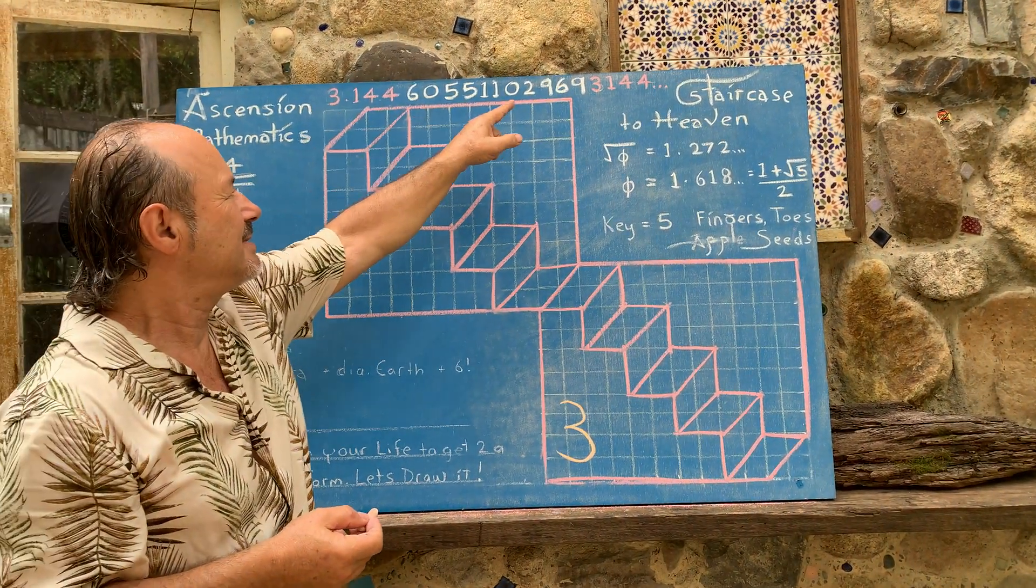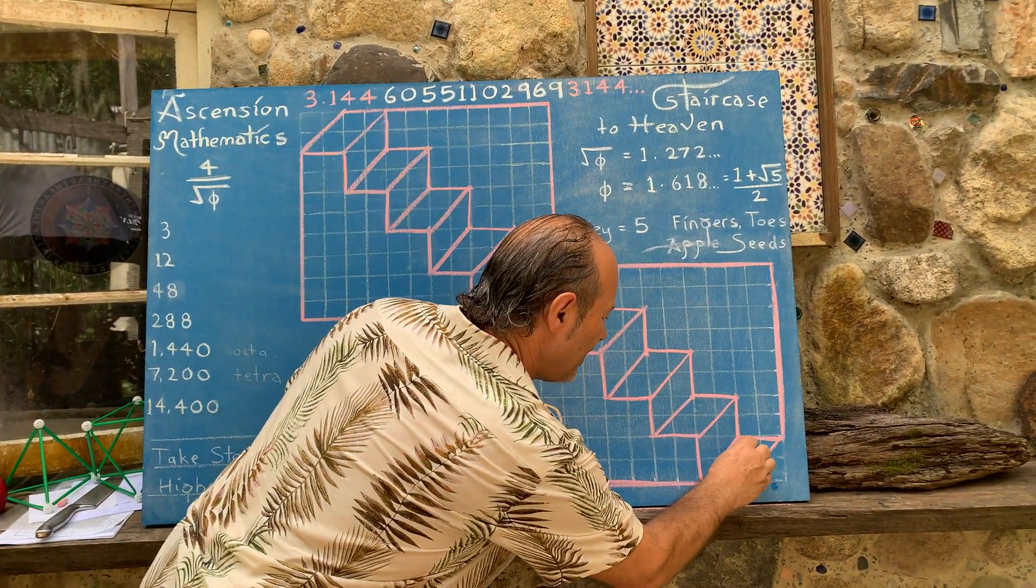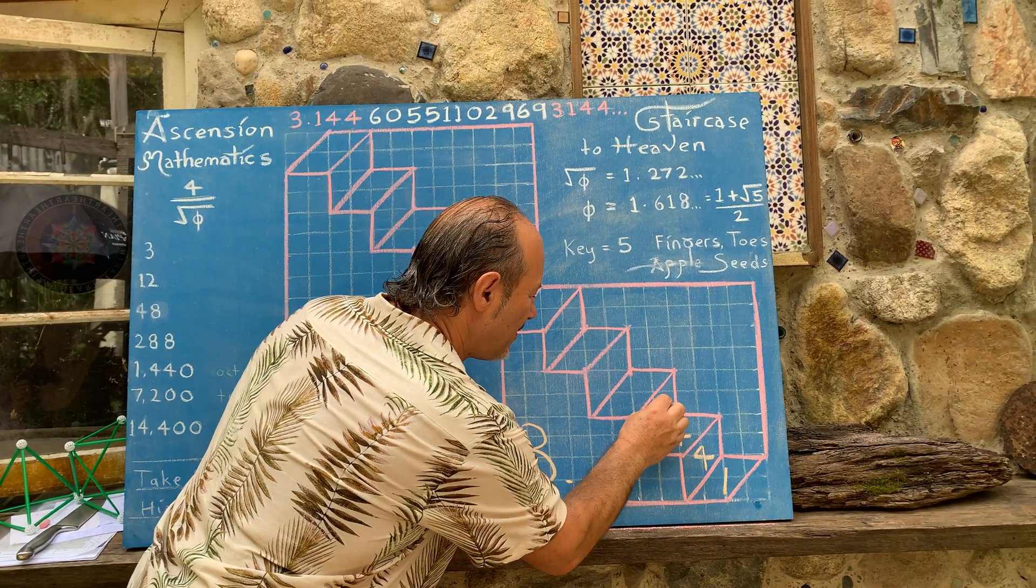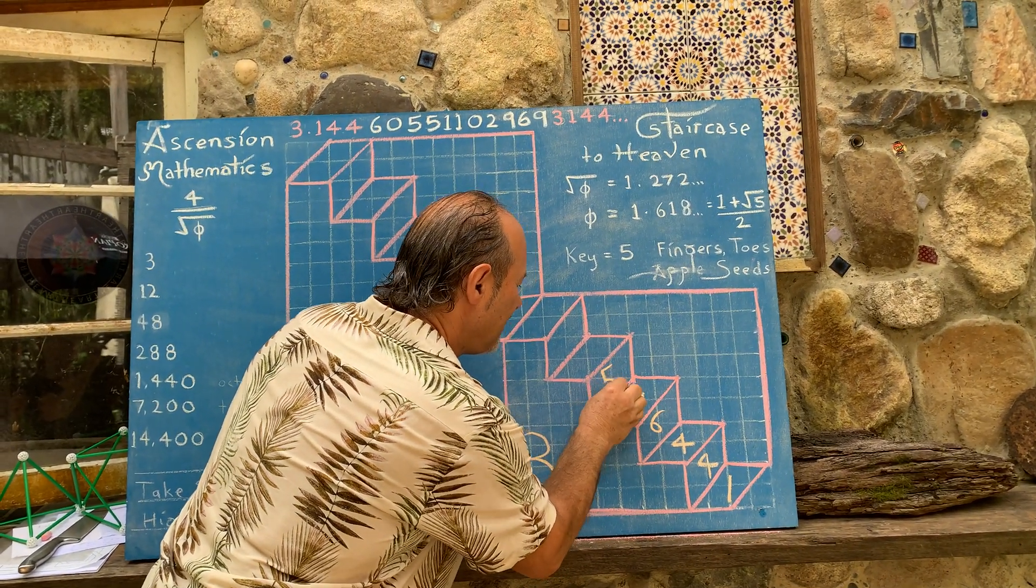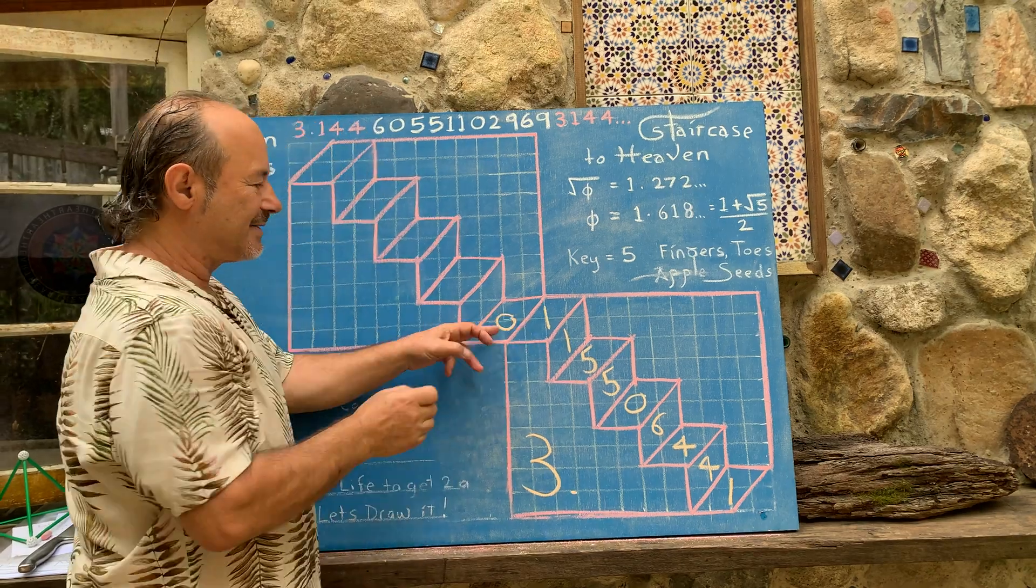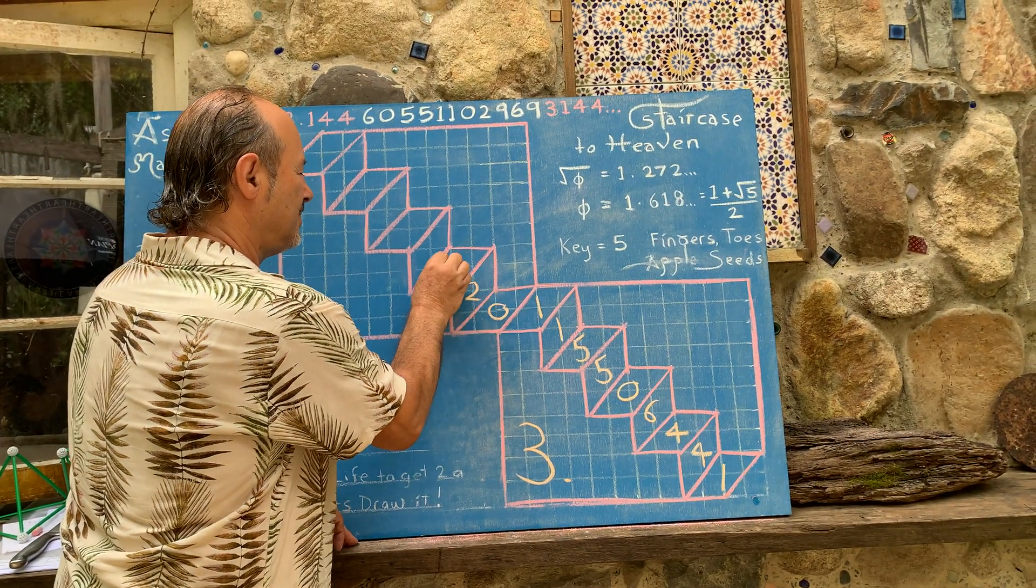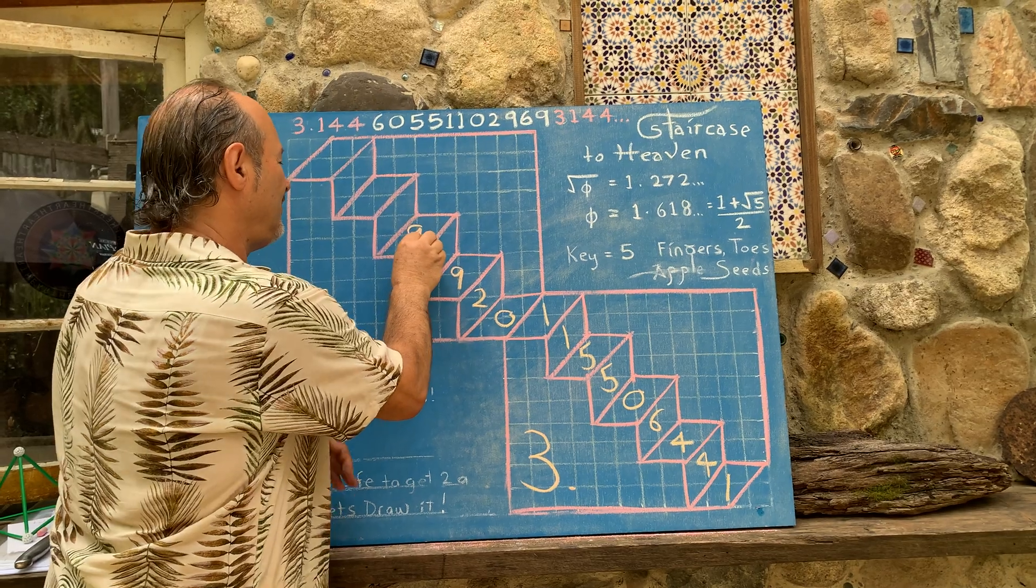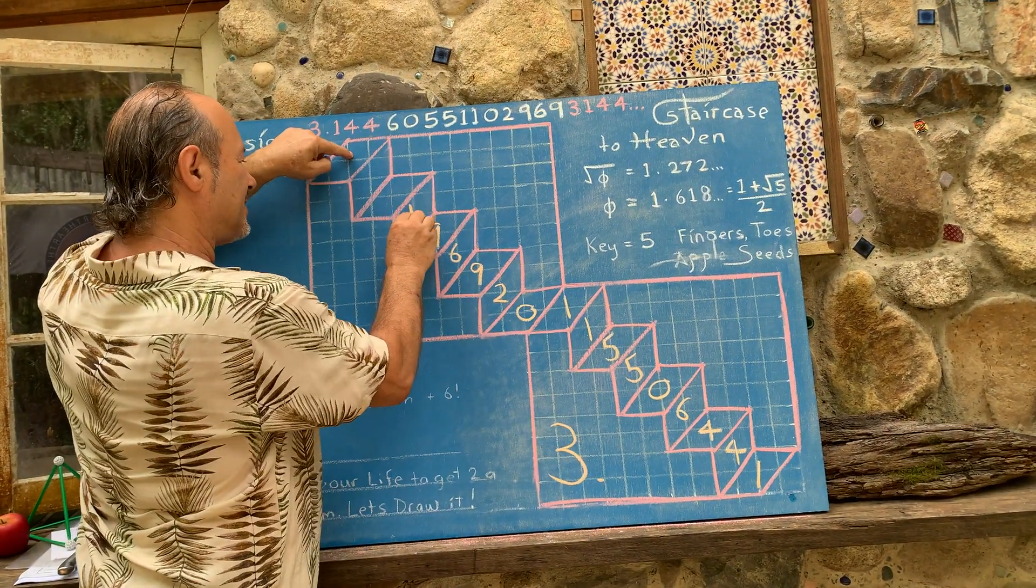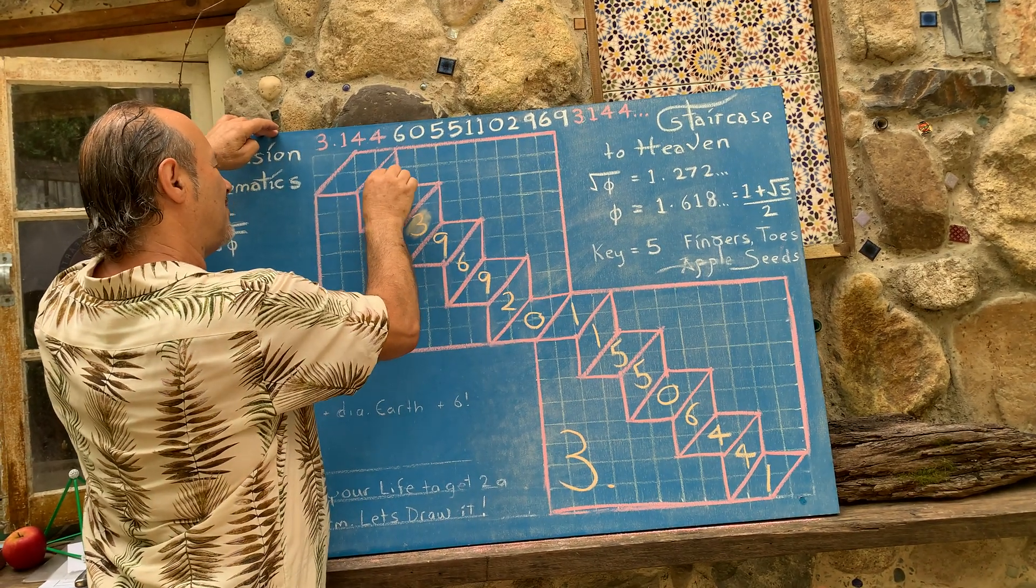So I'm taking these numbers, 3.144, and I'm encoding it onto the staircase. So I'm going to write 1, 4, 4. So that represents 3.144, 6, 0, 5, 5, 1, 1. And this is where they join, so it's a 0. Then 3.144, 6, 0, 5, 5, 1, 1, 0, 2, 9, 6, 9. And notice what happens on the last four steps, the 3.144 repeats.